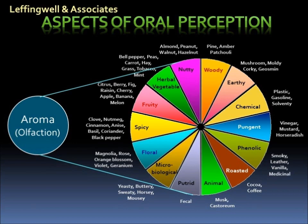This slide provides an aroma wheel comprised of 14 major categories, with examples of the types of aroma one might encounter. For example, in the woody category at top right, we list a few examples such as pine and amber, and the deep woody notes of patchouli. The phenolic category ranges from smoky to vanilla to medicinal, and thinking of spicy, clove, nutmeg, and black pepper are good examples. In this simplistic representation, it's not practical to categorize the many thousands of aroma chemicals often encountered. The aroma contribution is often a major factor in the pleasant or unpleasant overall oral perception.